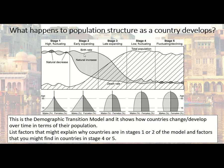In stage two, the birth rate and death rate are much further apart, which causes the total population to increase quite rapidly. Stage three continues this, but towards the end of stage three the birth rate is coming down and getting closer to the death rate. It's still above it, so the population is still growing, but they're getting closer.